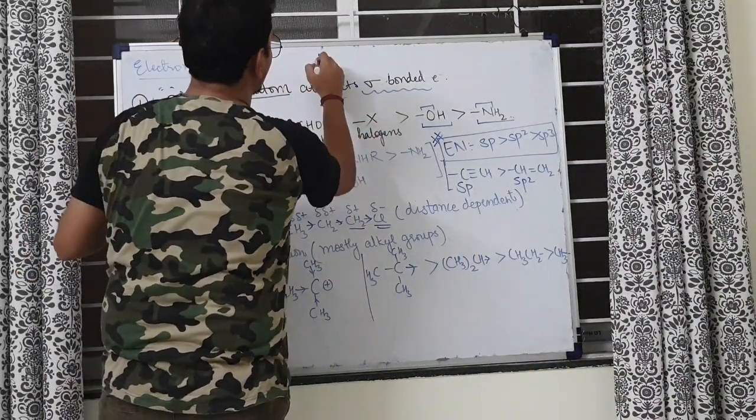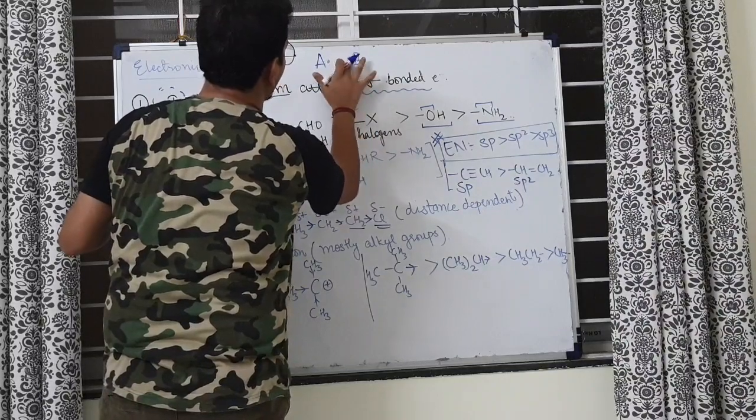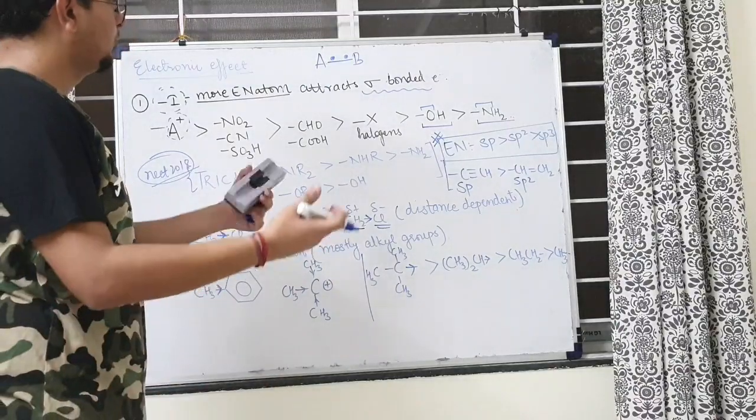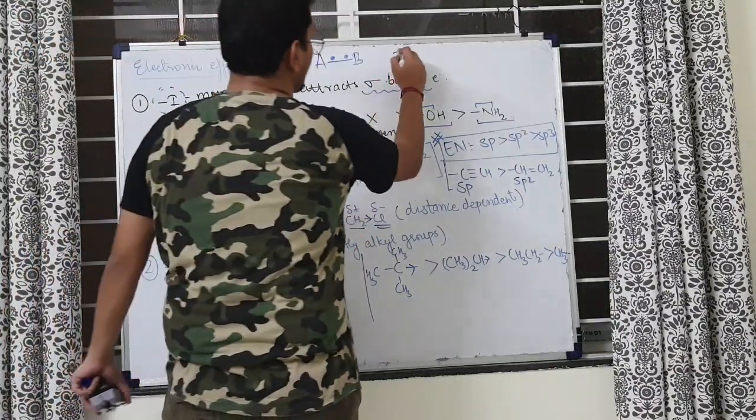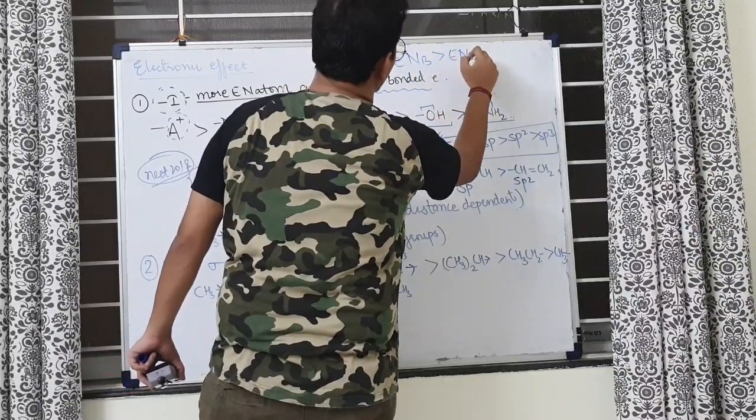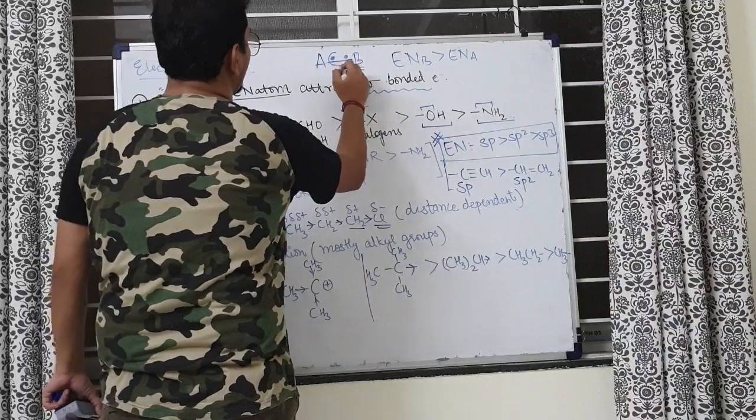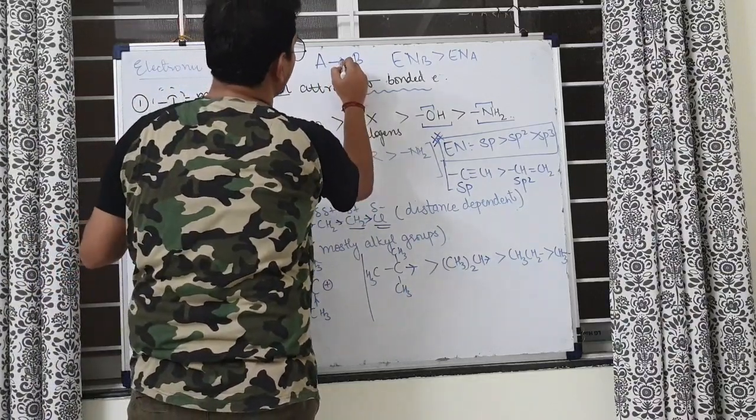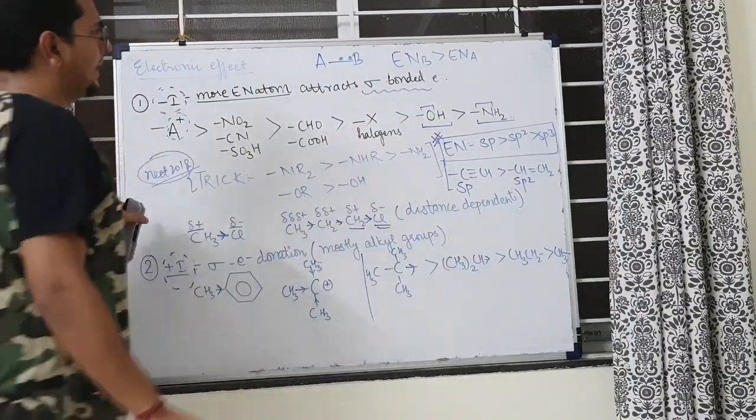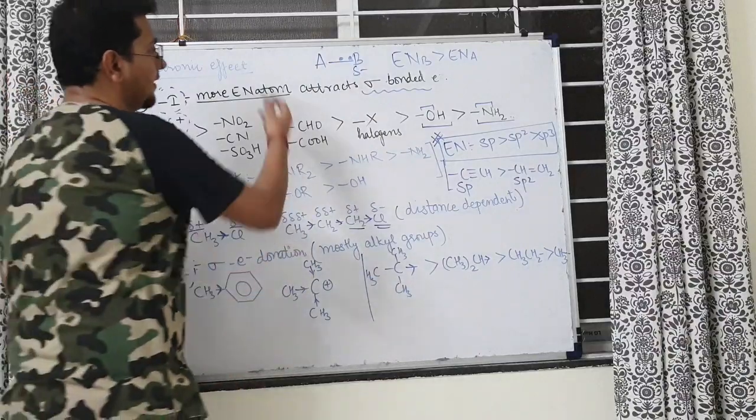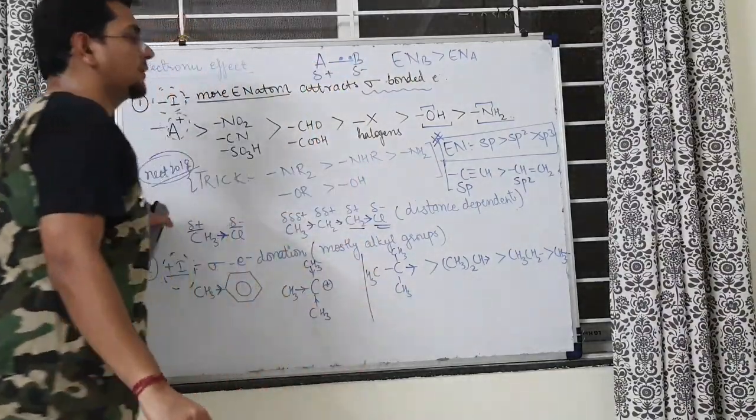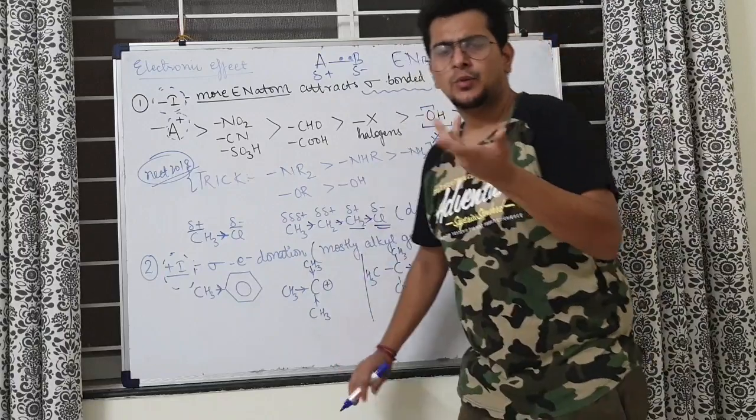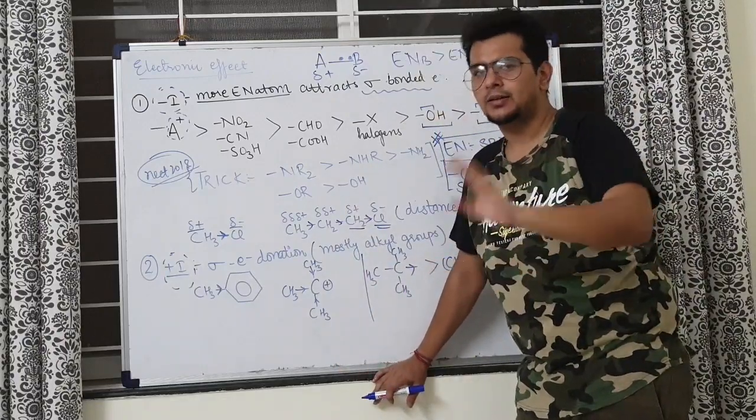Imagine we two are bonded - I've given one electron, you've given one electron, and we made a bond. This electron density should ideally be in the middle, but if electronegativity of B is more than A, the electronegative atom will attract the shared pair of electrons toward itself. So B gets a slight negative charge and A gets a slight positive charge - that slight negative and positive is also known as partial negative (δ-) and partial positive (δ+) charge.